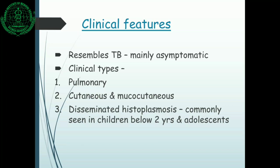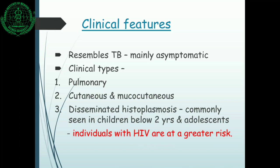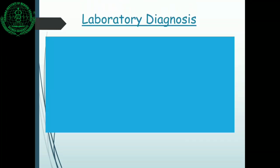Clinical features mainly resemble tuberculosis and are mostly asymptomatic — about 95% are asymptomatic. There are various clinical types: pulmonary type, cutaneous and mucocutaneous type, and disseminated histoplasmosis, which is commonly seen in children below two years of age. Apart from this, disseminated histoplasmosis can also be seen in patients with HIV, and as you know, it is one of the criteria to decide the stages of HIV disease.